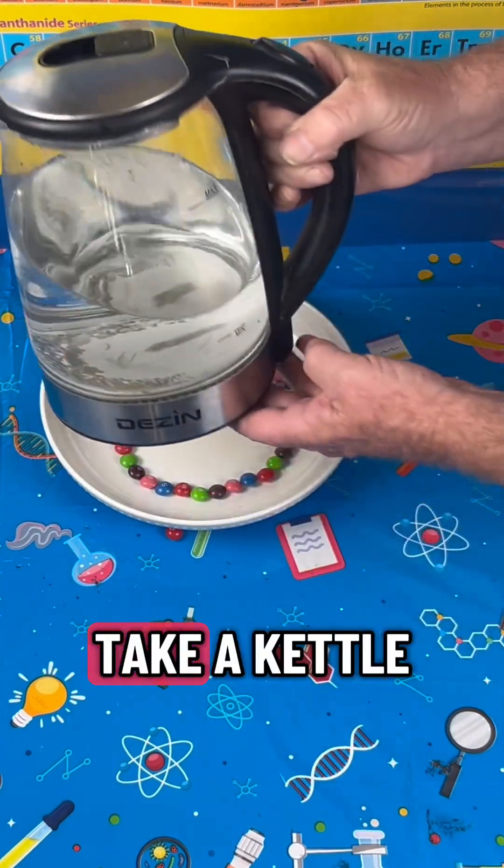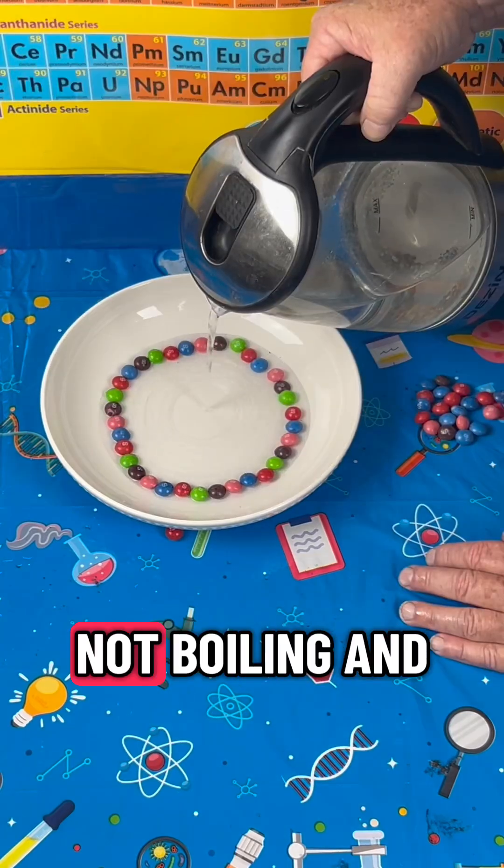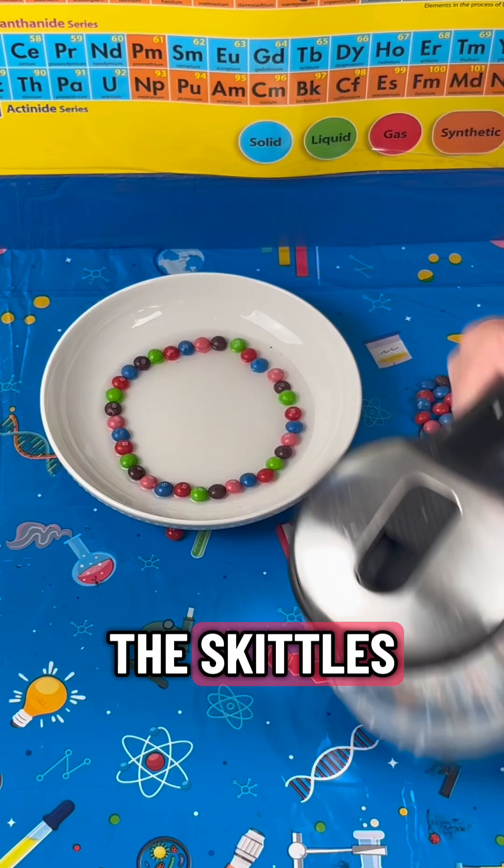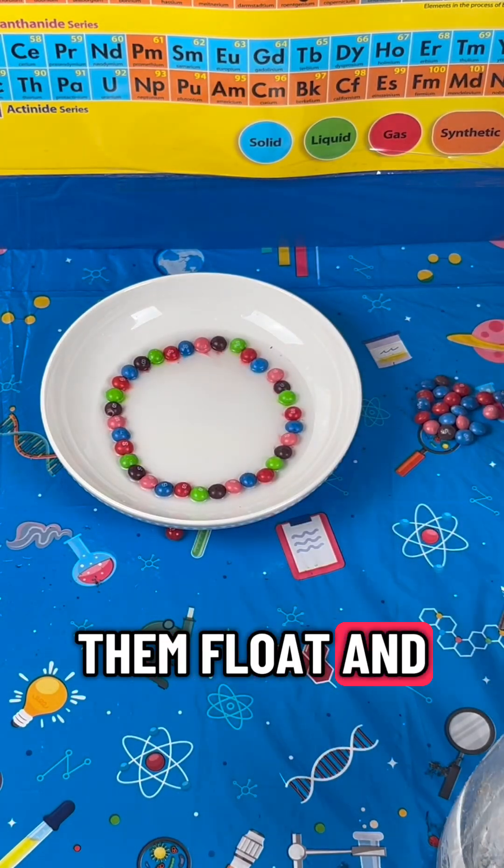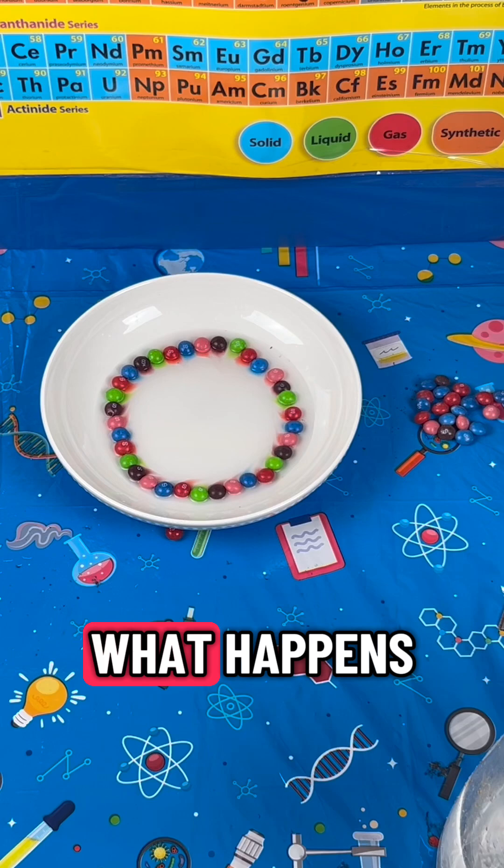Next, you're going to take a kettle and get some warm water, not boiling, and pour it just enough to meet the Skittles but not make them float. Let's check out what happens.